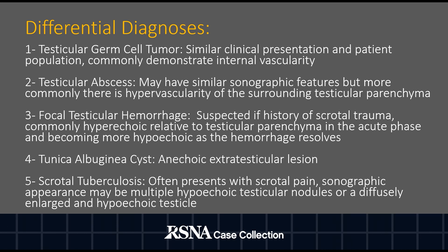Differential diagnoses include testicular germ cell tumor, testicular abscess, focal testicular hemorrhage, tunica albuginea cyst, and scrotal tuberculosis. Testicular germ cell tumor is the top and most important differential diagnosis, as it can have an identical clinical presentation in a similarly aged patient population. However, we would expect a testicular germ cell tumor to demonstrate a degree of internal vascularity, which was not present in this case.